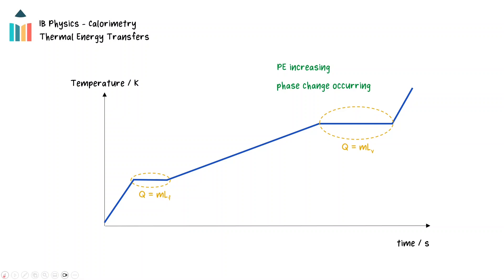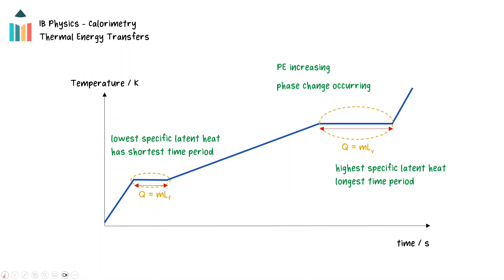The specific latent heat of vaporization is always greater than the specific latent heat of fusion for a substance. Therefore, if the rate of energy transfer remains constant, it will take more time for the liquid to undergo a change of state into a gas than it would for the same mass of the same material to undergo a change of state from a solid into a liquid. This is evident on the graph by the time period shown for the phase changes.